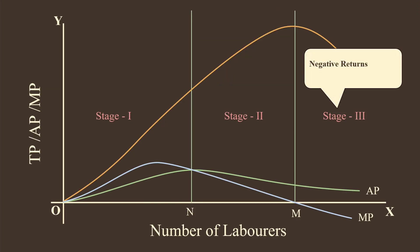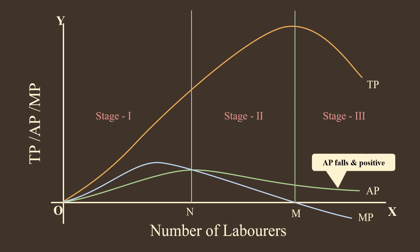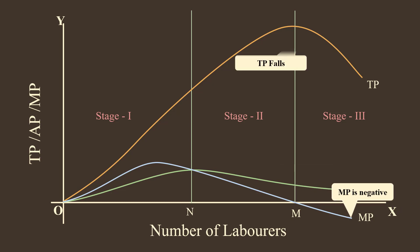Stage 3: Negative Returns. This stage begins when total product starts falling. In this stage: 1. Average product keeps falling and remains positive. 2. Marginal product becomes negative. 3. Total product falls.